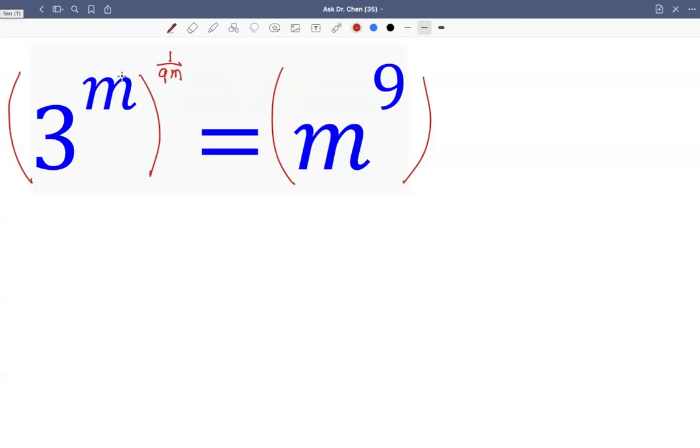Because this side I have raised by m, the other side I have raised by 9. So I want to multiply, because it's an equation, I can perform the same operation on both sides simultaneously.